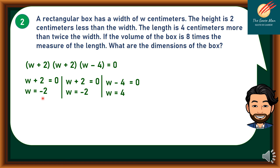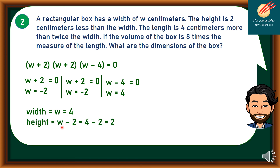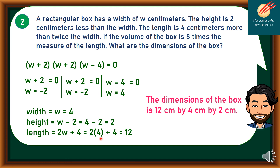Notice that we cannot use w equals negative 2 as the value of the width because there is no width of negative 2. Therefore, the width equals w equals 4. The height is w minus 2, so substituting w equals 4 gives 4 minus 2 equals 2. The length is 2w plus 4, so substituting w equals 4 gives 2 times 4 plus 4 equals 12. Therefore, the dimensions are 12 cm by 4 cm by 2 cm, arranged as length by width by height.